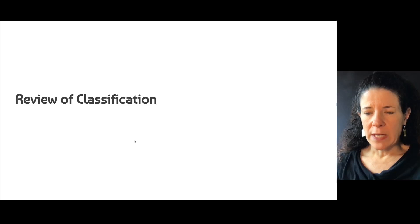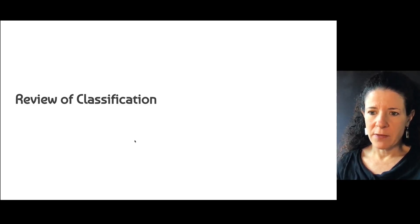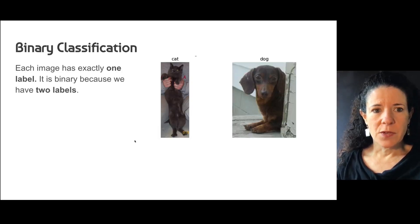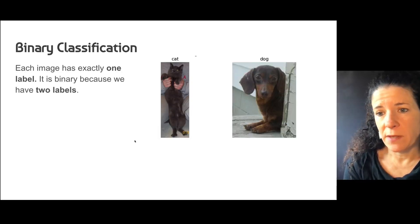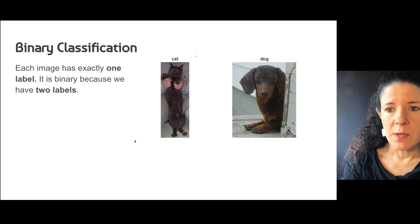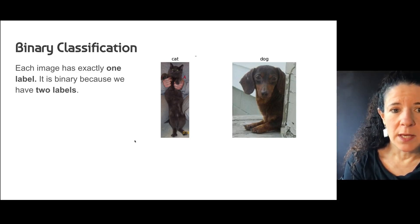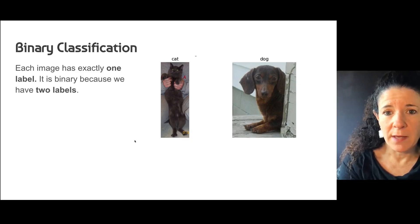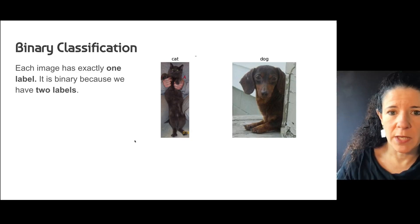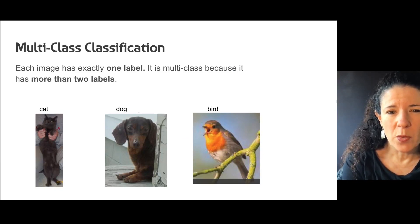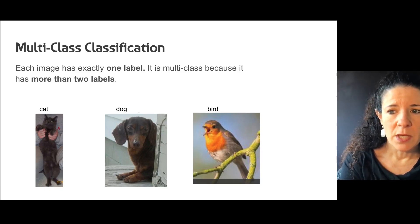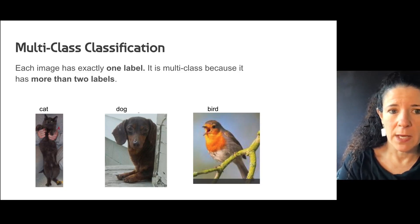Let's do a quick review of classification before we get into classification metrics and losses. In binary classification, we have two labels — for example, images of cats and dogs, where every image is either a cat or a dog. Multi-class classification is when we have more than two labels — for example, cats, dogs, and birds, where each image belongs to exactly one class.